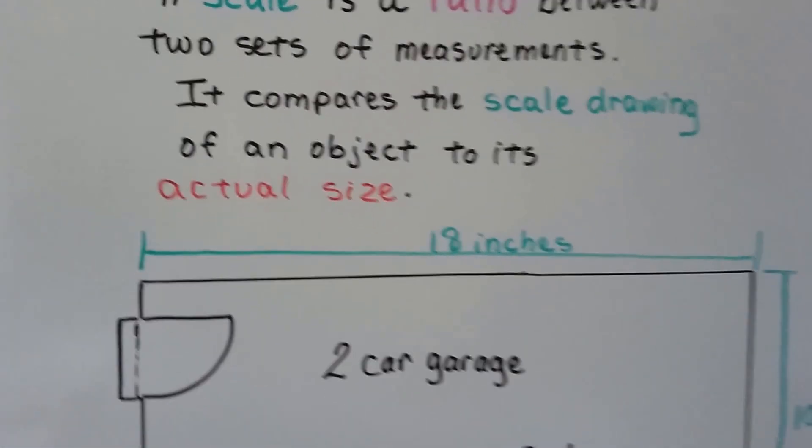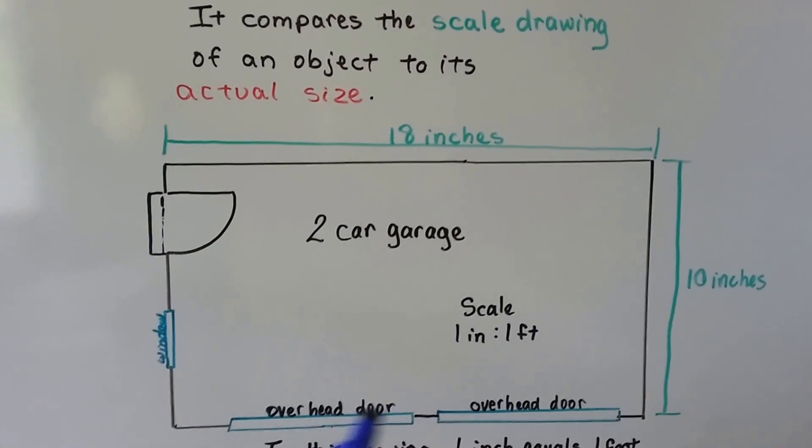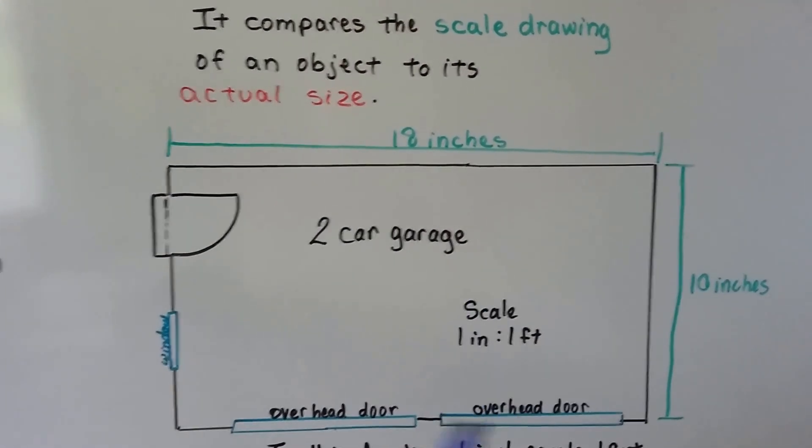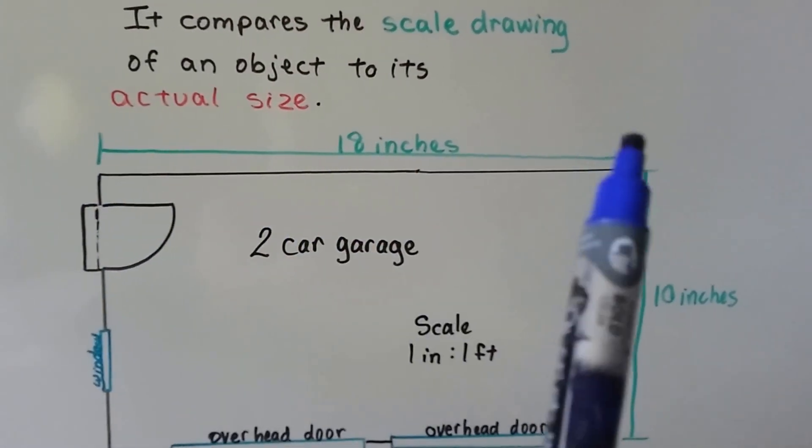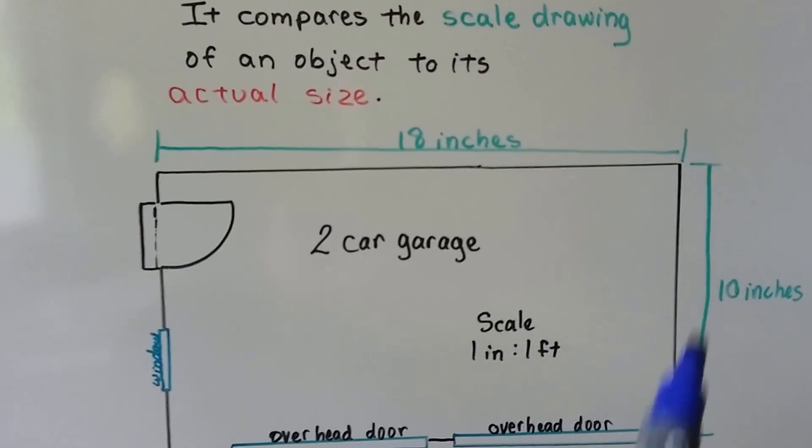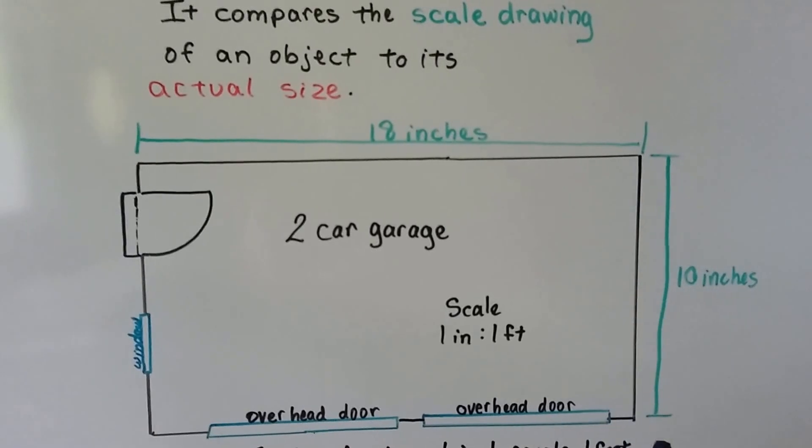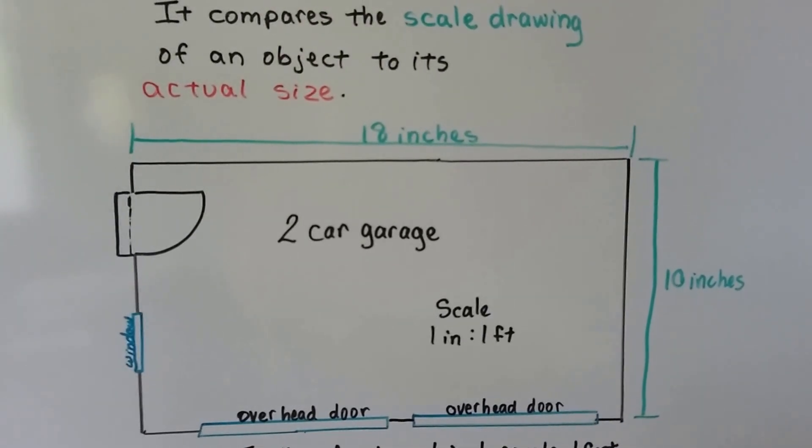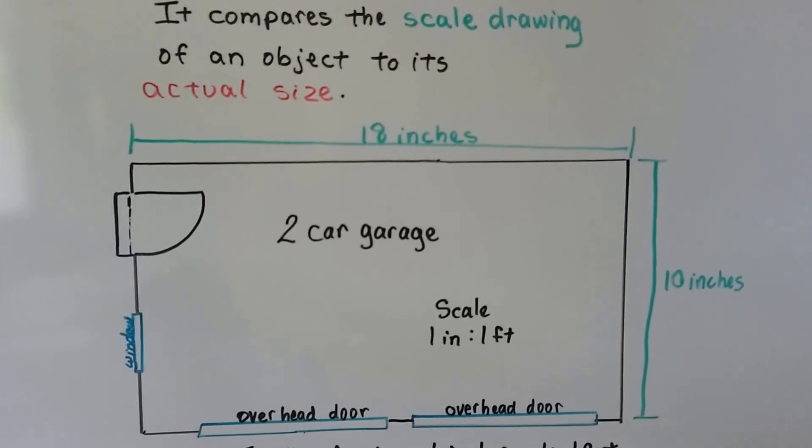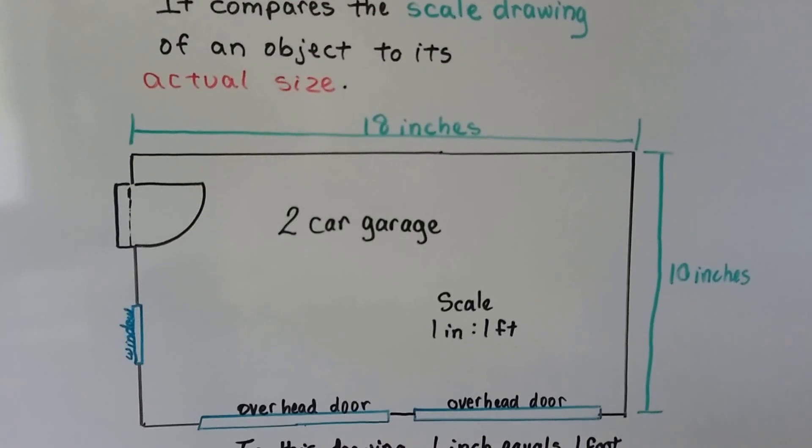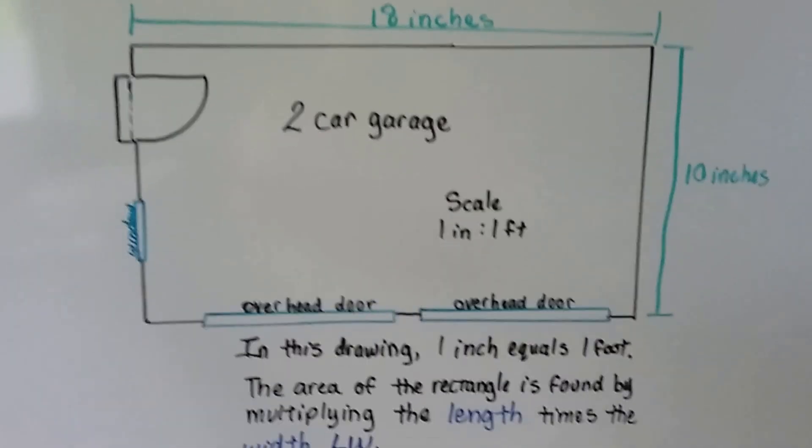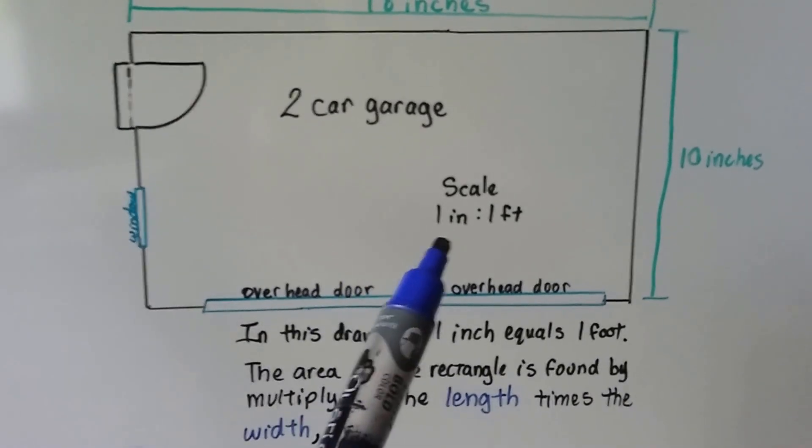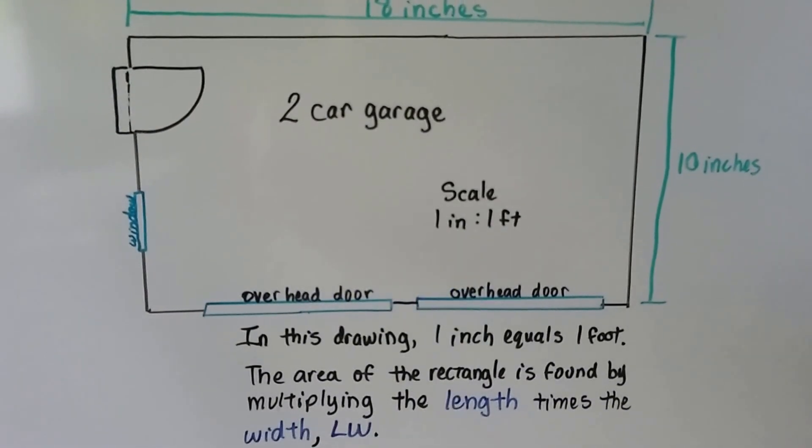So here we have a garage, and it's a two-car garage. Here we've got one overhead door and another overhead door, so you could park two full cars in here. It says it's 18 inches going this way in length and 10 inches in width. And we know a garage isn't really 18 inches by 10 inches, you wouldn't even be able to fit a toy car hardly in that. We've got a door here, we've got a window here, and in this drawing, one inch equals one foot.